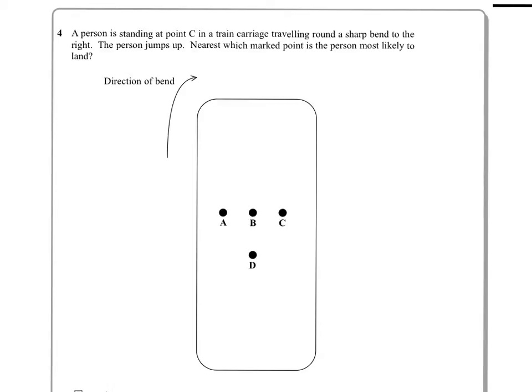Here we have a person who's standing, according to the question, at point C. They're in a train carriage that's going around a sharp bend to the right. The person jumps up and the question asks, which marked point is the person most likely to land? As the train goes this way, all of these points will go this way.